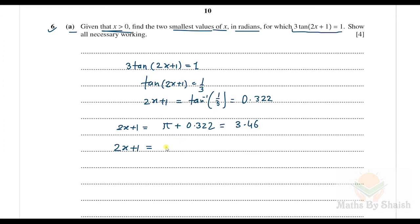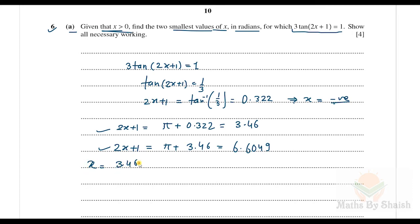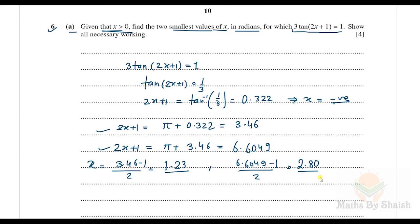Adding another period: 2x + 1 = π + 3.463 = 6.605. The first equation gives x = (0.322 − 1)/2, which is negative and rejected since x > 0. From 2x + 1 = 3.463: x = (3.463 − 1)/2 = 1.23. From 2x + 1 = 6.605: x = (6.605 − 1)/2 = 2.80. The two smallest values of x are 1.23 and 2.80 radians.